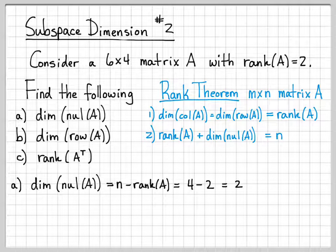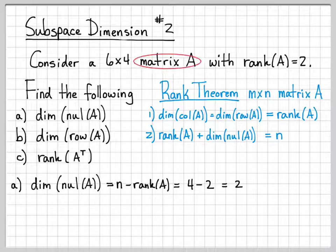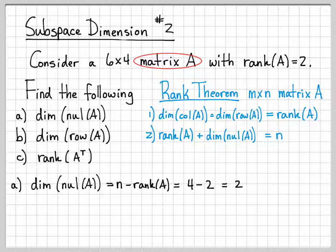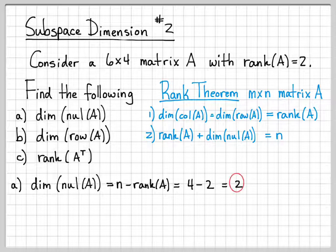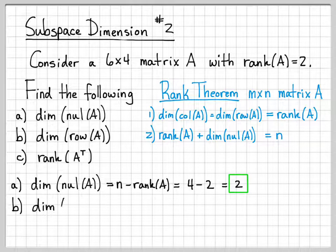So we've been able to answer something kind of important about this matrix. We know that its null space has a dimension of 2 even though we weren't even given what A was equal to. We just know that it's a 6 by 4 matrix. We have no idea what the entries of that matrix are, yet we were still able to determine the dimension of the null space.